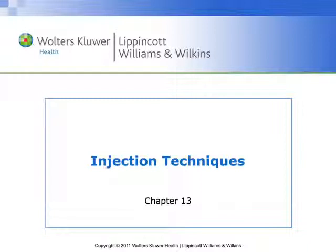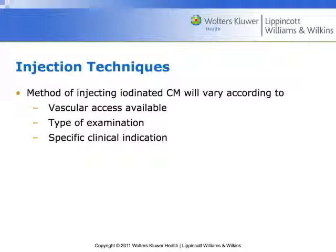Before we do any kind of injection, we're going to be thinking about how is the access point, and using aseptic technique to look at that access point. We'll be imagining what kind of examination we're doing. So we've already started to think, right lower quadrant, does this person need contrast? Yes, there's elevated white blood cell count. I need to do a routine CT abdomen pelvis for this patient — 100 milliliters of IV contrast and however much oral contrast.